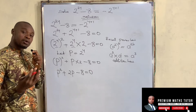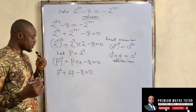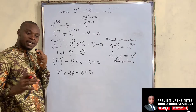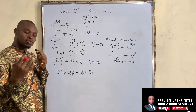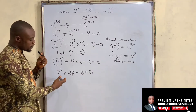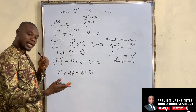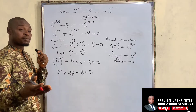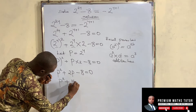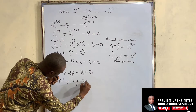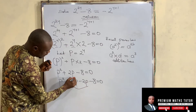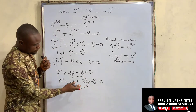Now we find the factors of this quadratic equation. Since we have 8 and 2 here, the factors will be 2 and 4 because 2 times 4 is 8. We need 4 minus 2, which is positive 2, and 4 times minus 2 which is negative 8. So I have p squared plus 4p minus 2p minus 8 equals 0. These are the factors replacing the middle term.